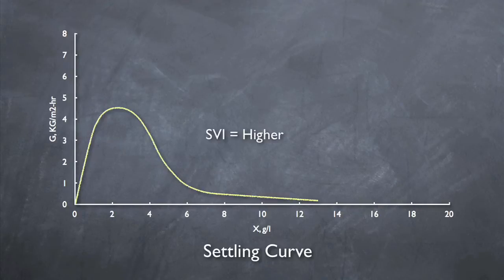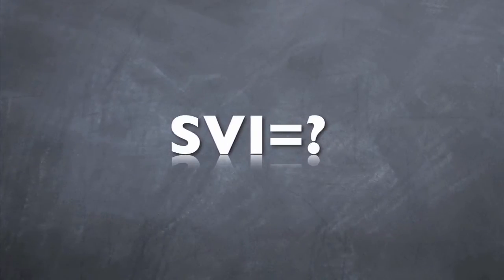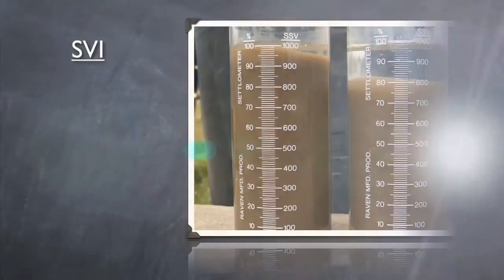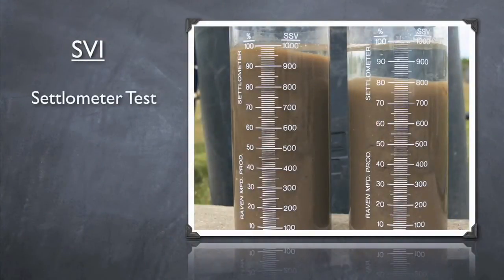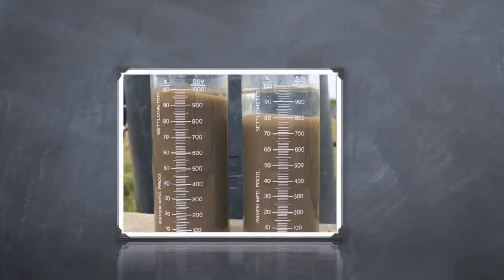So what does it matter if the curve is larger or smaller? Well, we'll find that out in a minute. But now that we know that SVI is important in determining the settling curve, how do we determine the SVI, and what causes it to change? Well, the SVI can be determined by performing a settling meter test. Also, if you can, use a diluted sample to determine your SVI. This will allow for more accurate results, especially when the SVI is higher.